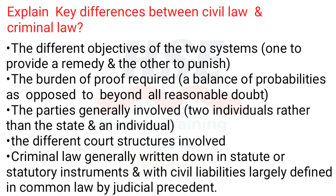Explain four key differences between civil law and criminal law. The different objectives of the two systems: one to provide a remedy and the other to punish. The burden of proof required: a balance of probabilities as opposed to beyond all reasonable doubt.